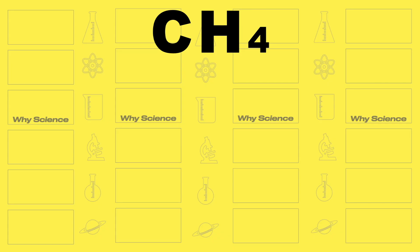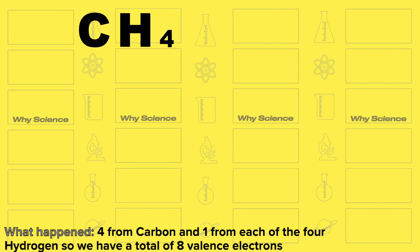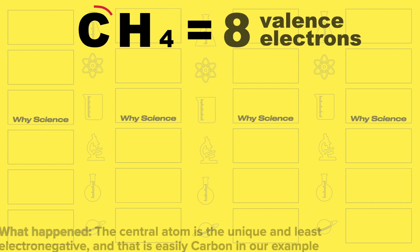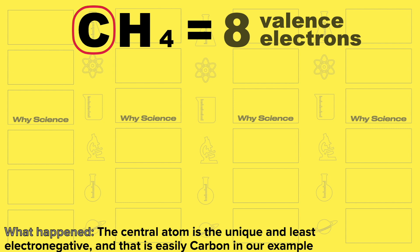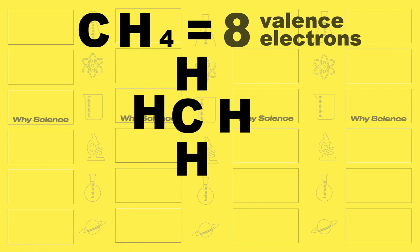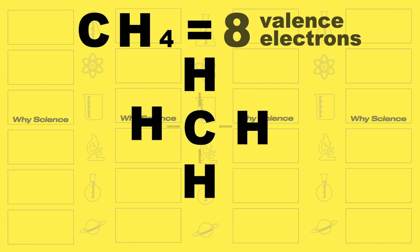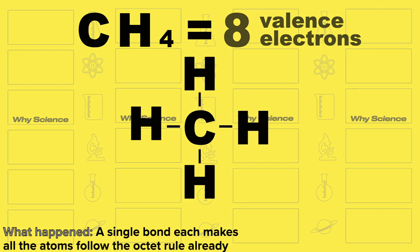When we deal with molecules like methane, count your total number of valence electrons first — which in our case is 8 — then identify your central atom, which is carbon. After that, put all other remaining atoms around your central atom, which in our case are 4 hydrogen atoms, then give them a single bond each. You can see that all atoms are now following the octet rule.